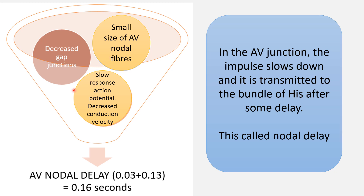What are the reasons for this delay? In the AV junction, the nodal delay happens because the AV node has decreased gap junctions. Gap junctions are the areas through which electrical signals can quickly be transmitted from one cell to another. At the level of the AV node, the number of gap junctions in these cells is less, leading to impaired conduction. This is the first reason why conduction is slowed down at the AV node.